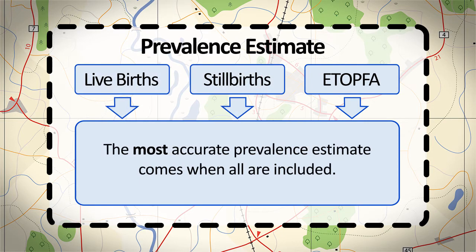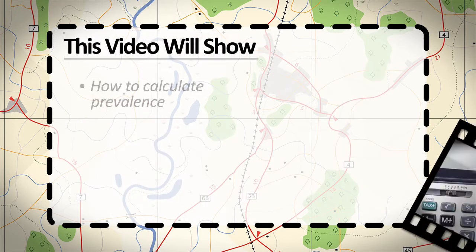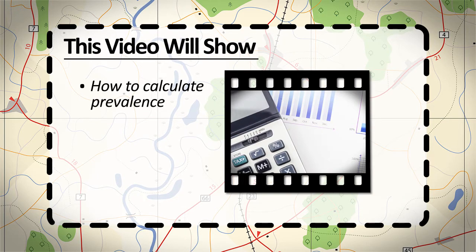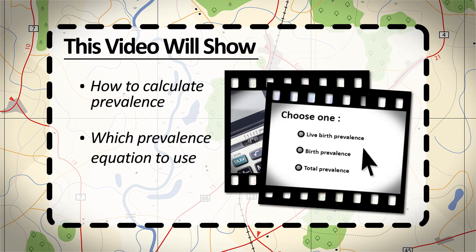The birth defect prevalence estimate is most accurate when these three pregnancy outcomes are included. This video will show how to calculate prevalence based on the data available to your program, and will discuss which prevalence equation to use depending on which data you can collect for your numerator and denominator.